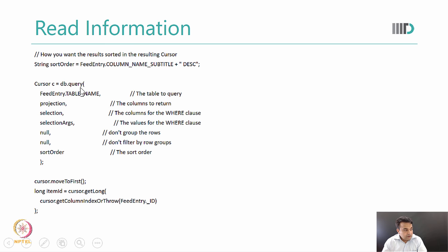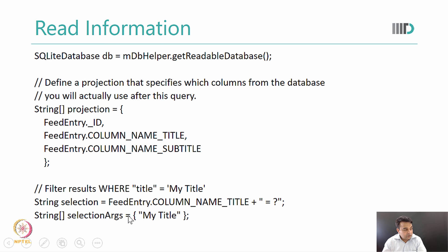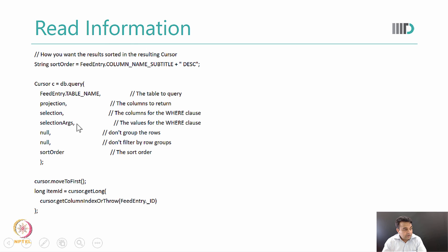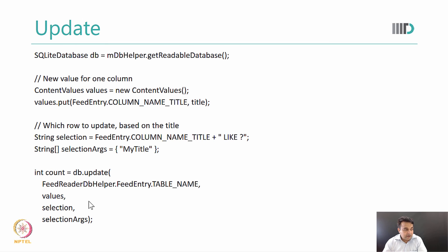Then we execute the query and get the result into what we call a cursor. In the query we give: the table name we want to query, the projection — the columns we want returned, the columns for the WHERE clause, and the values for the WHERE clause. We also specify that we don't want to group rows or filter by row groups, and then we define the sort order declared as descending. Once we get this cursor, we can start reading from it — it will contain all rows where the title equals 'my title'.